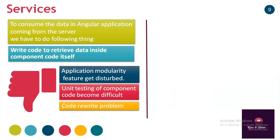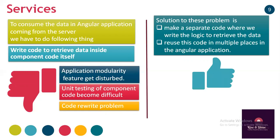If we want to fetch data in multiple components in our application, we have to write the same logic in each and every component — this leads to a code rewrite problem. When we rewrite the same code there is a possibility of introducing bugs, and maintenance increases. So these are the problems with writing data-fetching code inside components. The solution to maintain modularity is to make a separate code where we write the logic to retrieve data from a server.